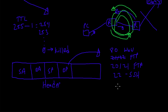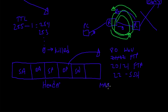Another very important part of the header is the sequence number. Why do we have a sequence number? Well, remember the maximum size of a packet is somewhere between 1500 and 1512 bytes.